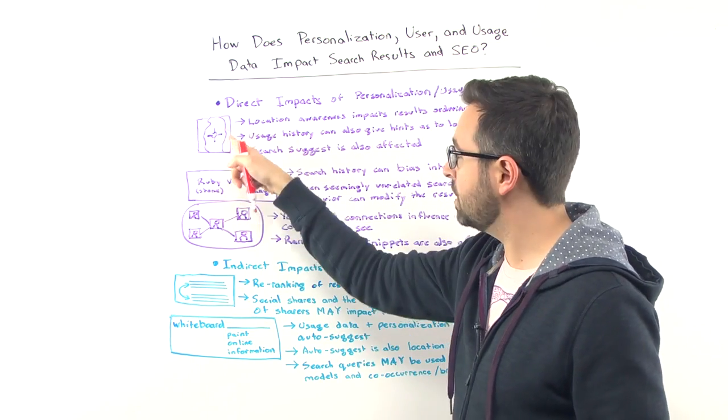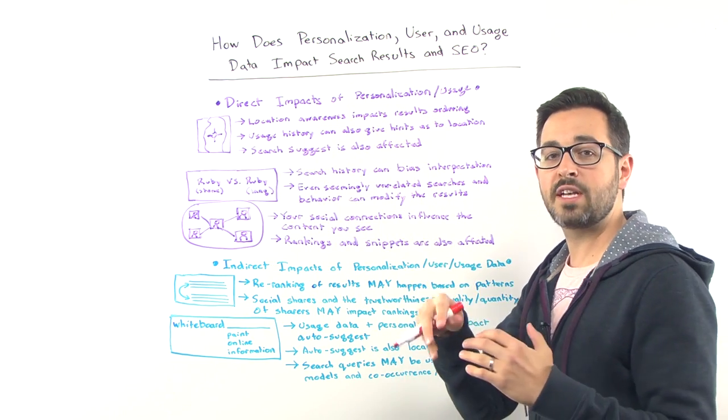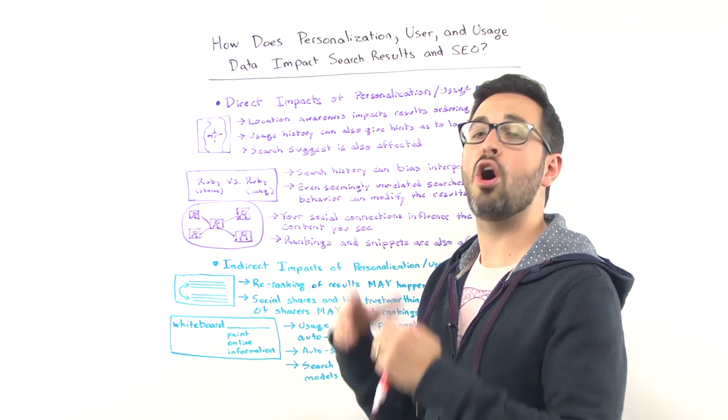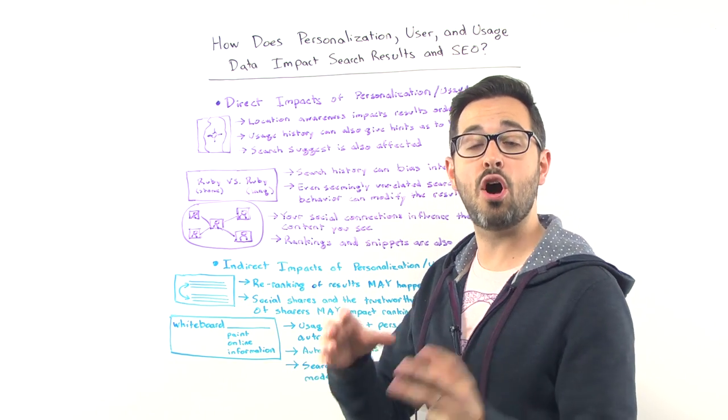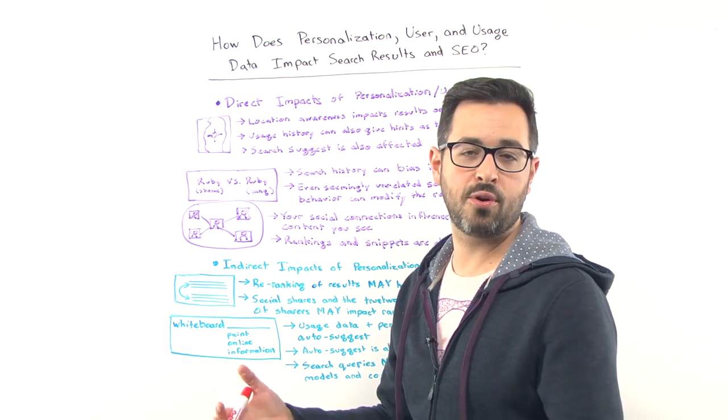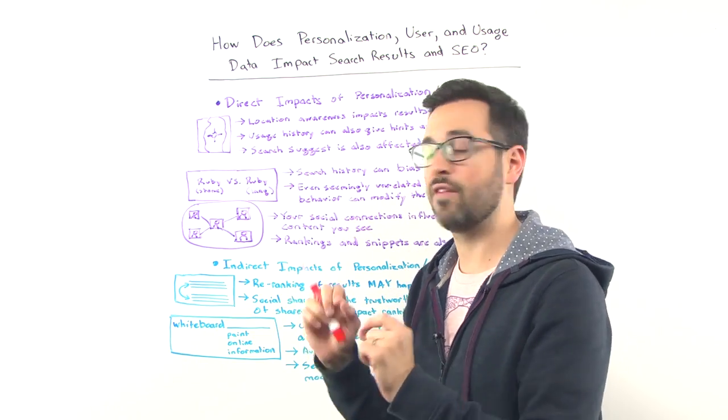If I'm here in downtown Seattle, there's location awareness that affects the results ordering. So I can perform searches, for example, for coffee works, and I will get the Seattle coffee works result. And perhaps if I was in Portland, Oregon, and they had a coffee works in Portland, I'd be getting those coffee works results.